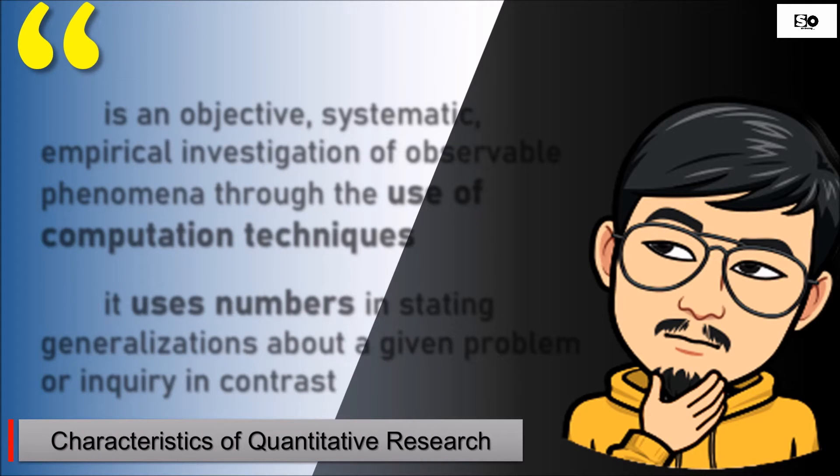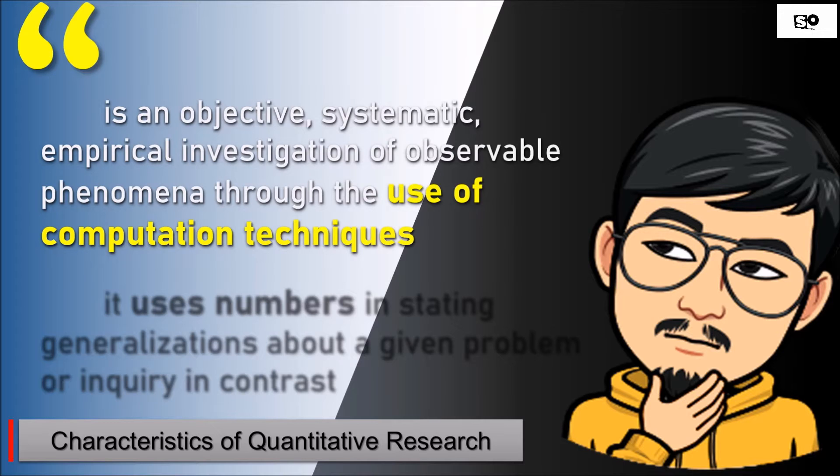Topic 1: Characteristics of Quantitative Research. First, quantitative research is an objective, systematic, empirical investigation of observable phenomena through the use of computation techniques. It has one purpose, follows a systematic process, and uses statistical treatments like Slovene's Formula from Statistics and Probability.